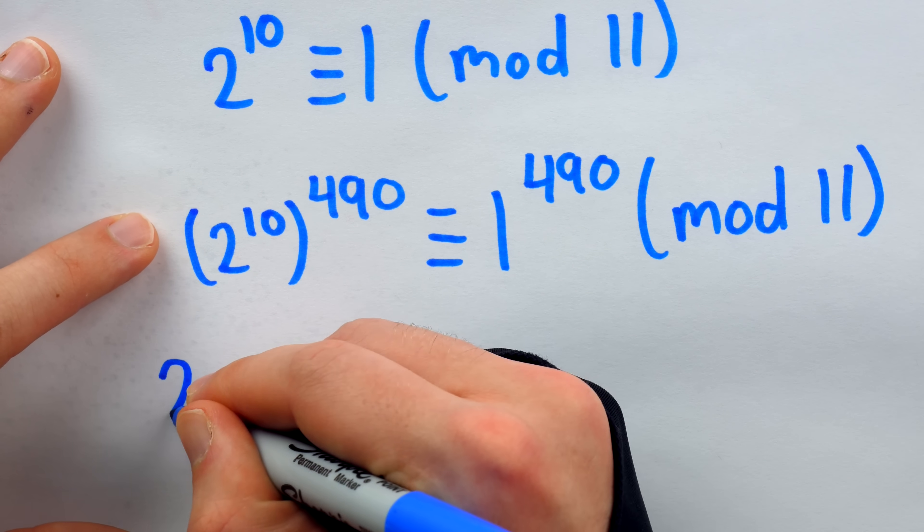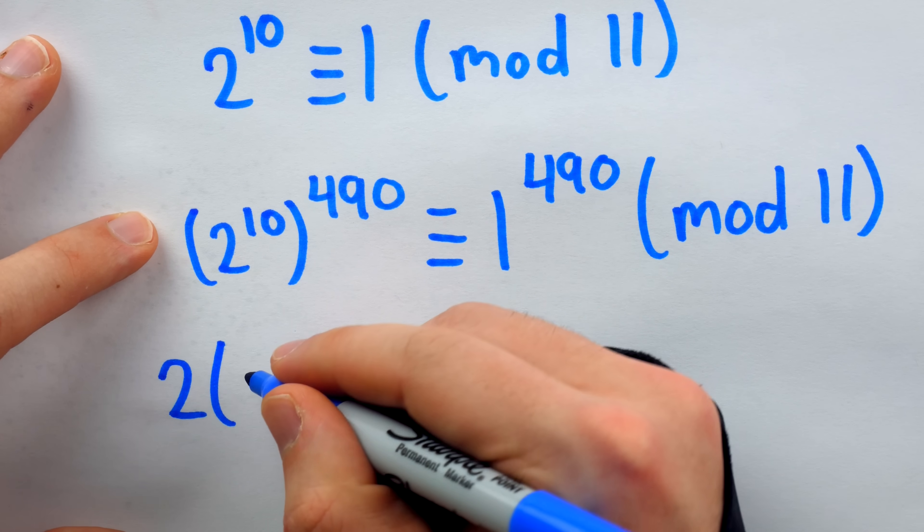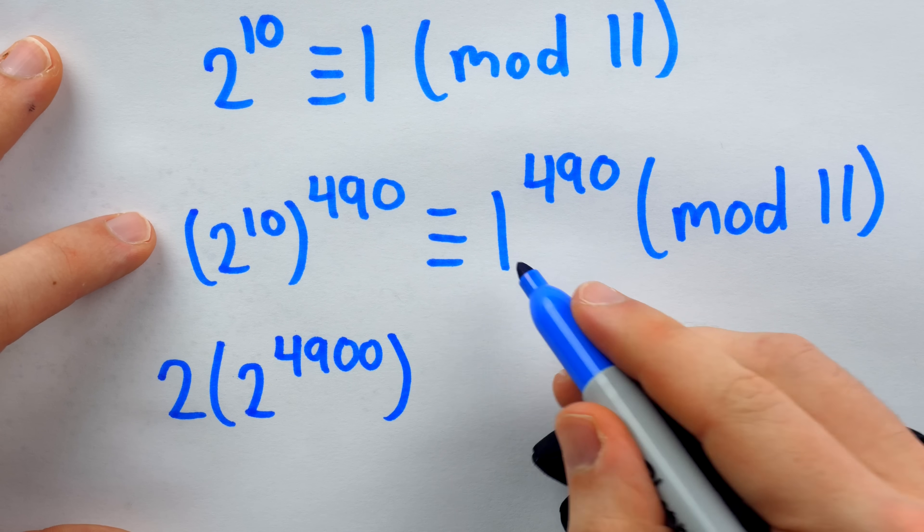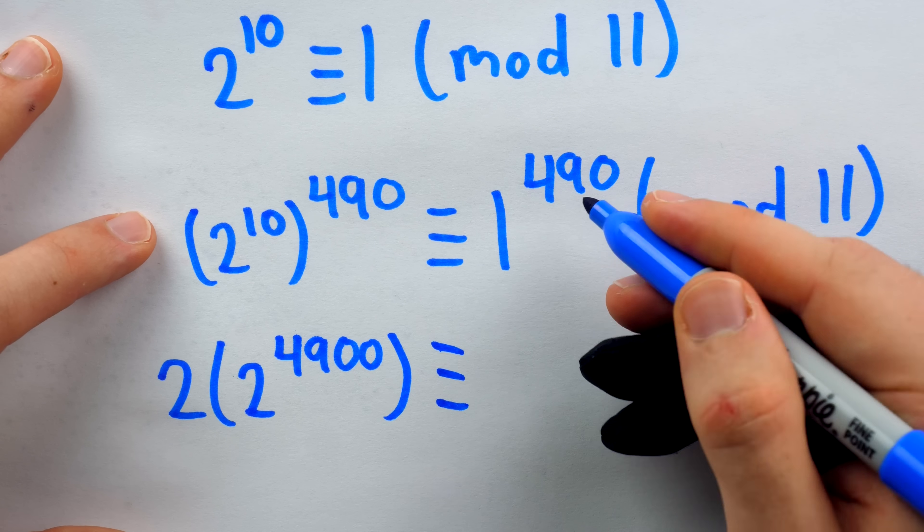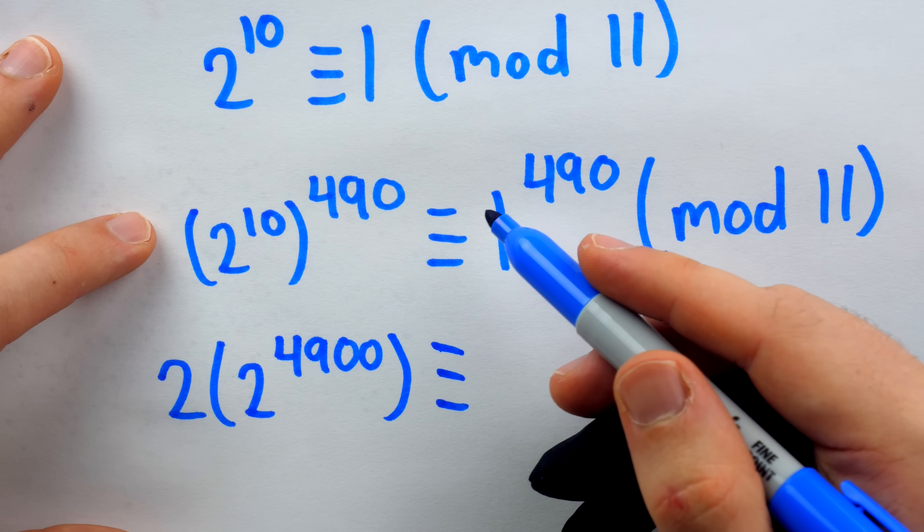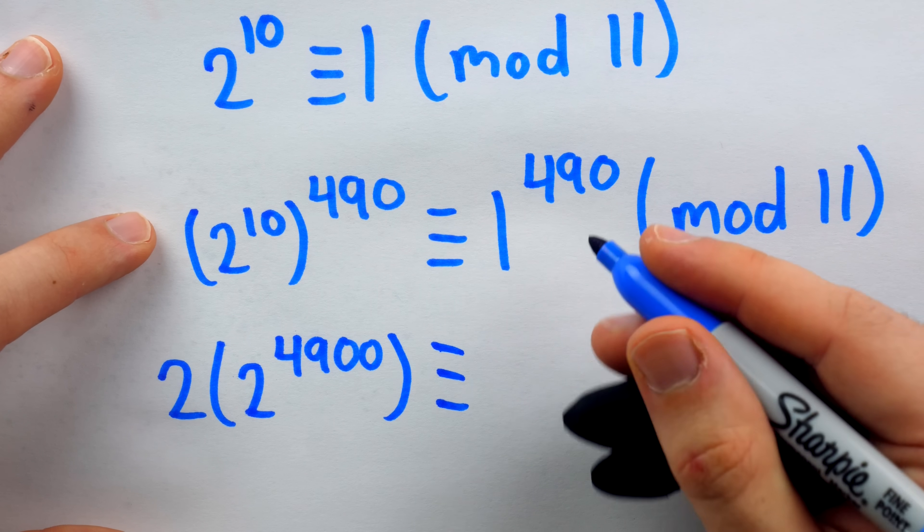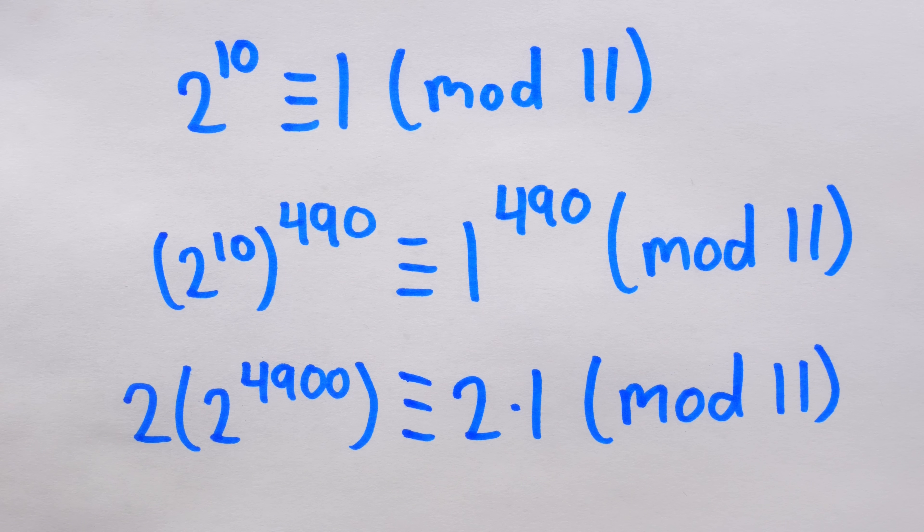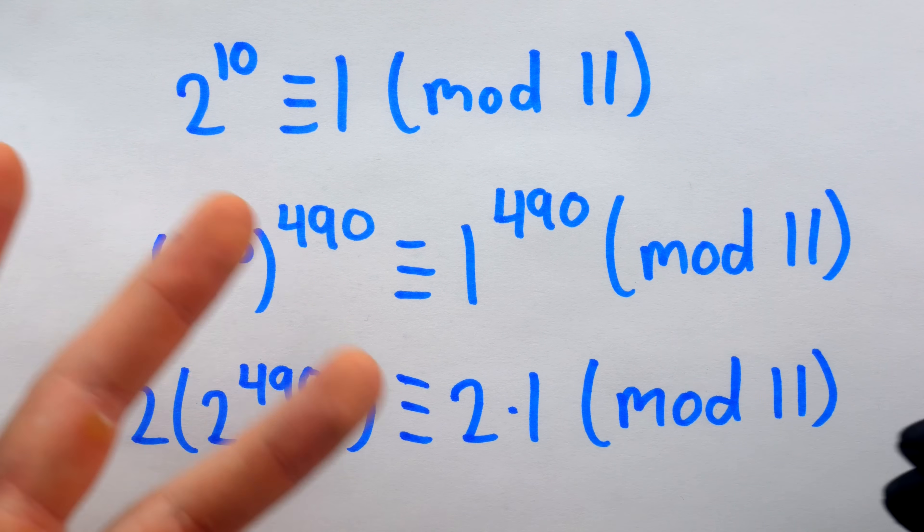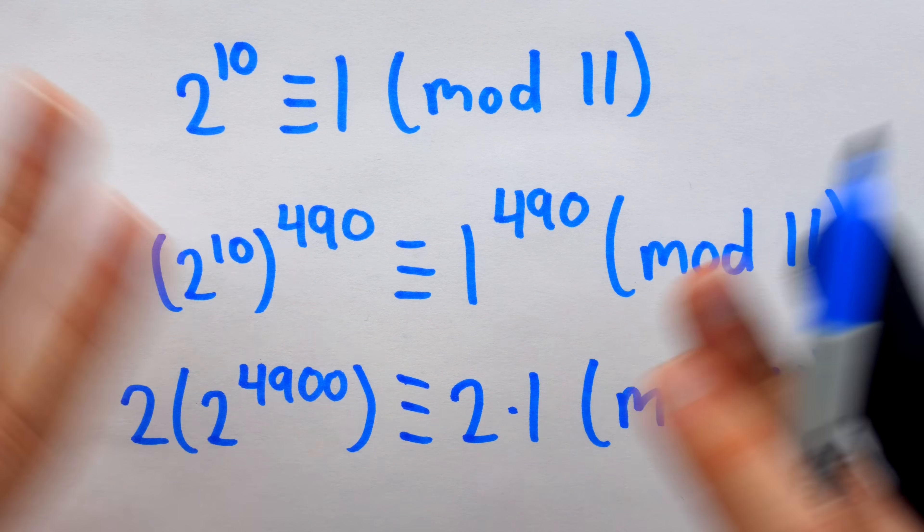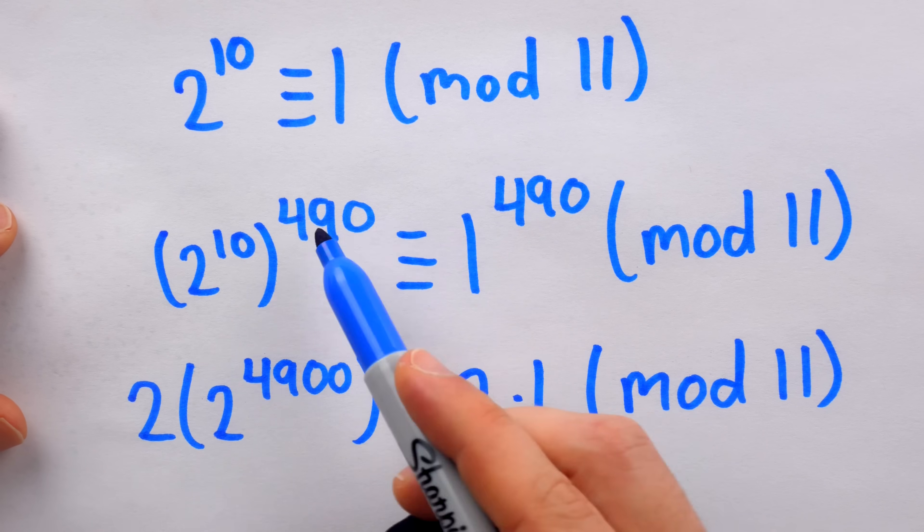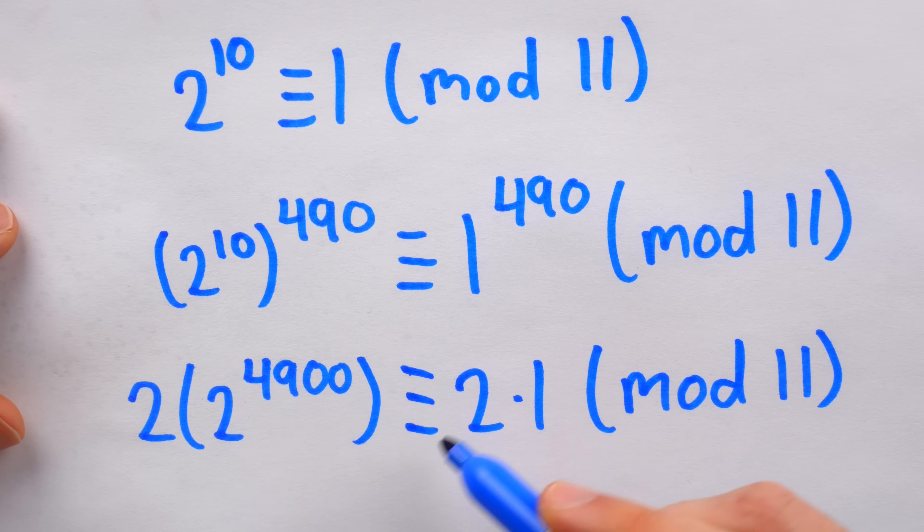So on the left we double this, and as we know this is just 2 to the power of 4,901. On the right, 1 to the power of 490 is just 1. 1 times 1 times 1, 490 times, it's just 1. And we are doubling that. So it's 2 times 1, mod 11. Note that if this is your first time learning about modular congruence, I've told you very little about it. I really just said the definition, and you're taking for granted that we can manipulate it like this while preserving the congruence, just like we would with an equal sign.